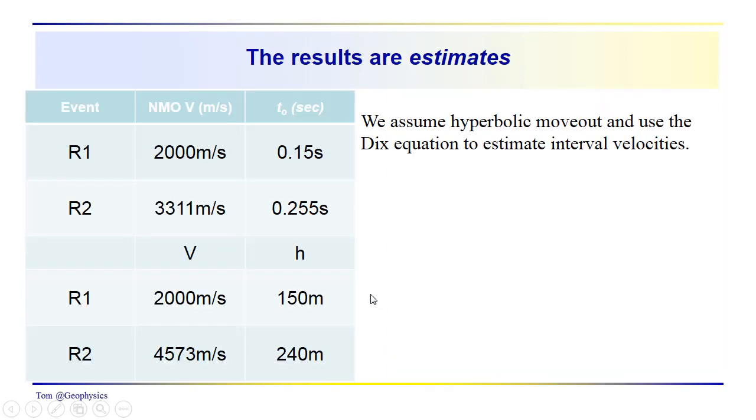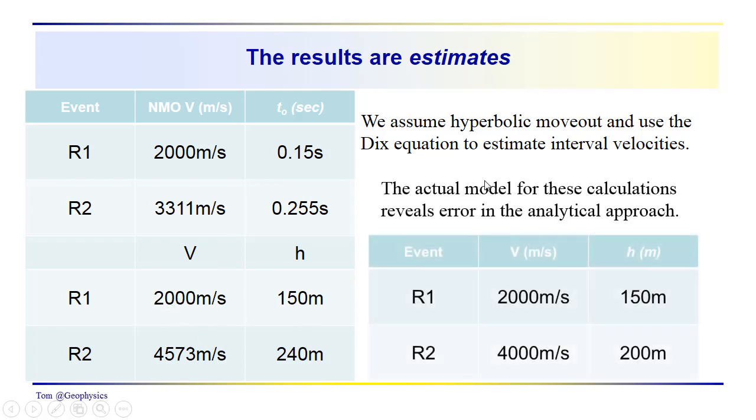So again, we're assuming this hyperbolic moveout. We use the Dix equation. We estimate these interval velocities and depths and so on. Now, the actual model, you can see that there's a considerable difference, particularly in layer two.